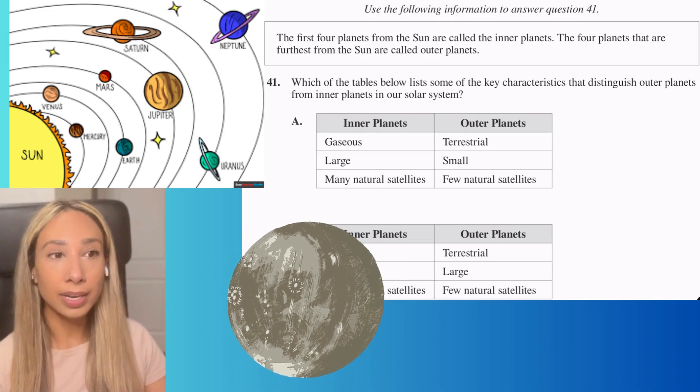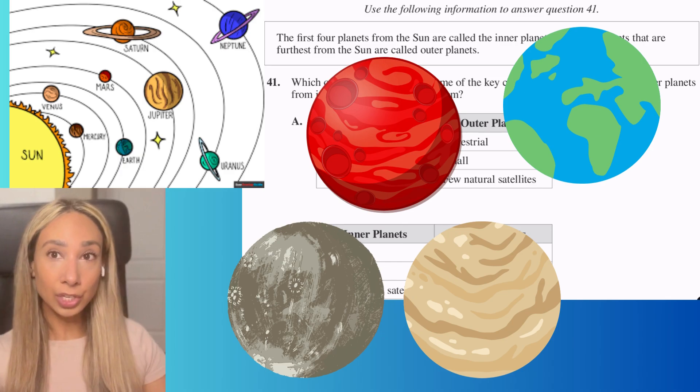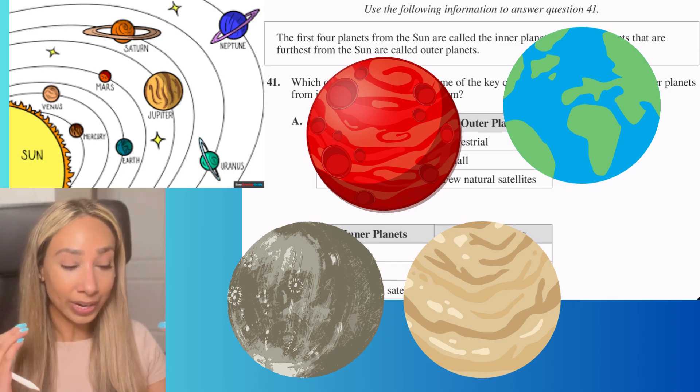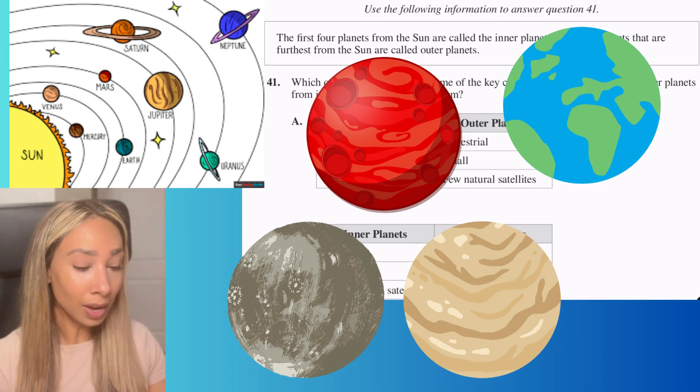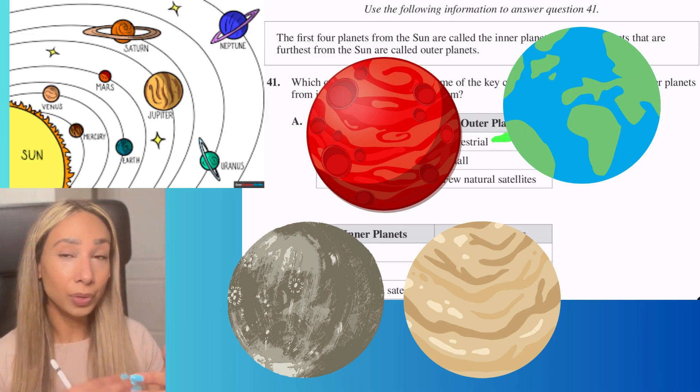Terrestrial planets are the ones that have a rocky surface very similar to Earth. That's Mercury, Venus, Earth, and Mars. I'm thinking about where those are in location to the Sun, and that already tells me those are probably our inner planets.